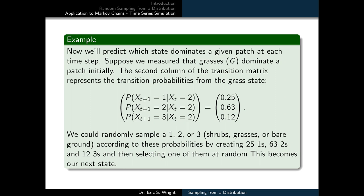Well that's all review, but now that we have the ability to sample from a probability distribution, and if we recognize that the three columns of the transition matrix just represent three different probability distributions, we're in a position where we can predict which state dominates a given patch in the landscape at each time step. So suppose we measured that grasses dominated a patch initially. The second column of the transition matrix represents the transition probabilities from the grass state to any of the other three states. And so these probabilities are 0.25 to transition to shrubs, 0.63 to stay at grasses, and 0.12 to transition to bare ground. We could then randomly sample a 1, 2, or 3 representing shrubs, grasses, or bare ground according to these probabilities by creating 25 ones, 63 twos, and 12 threes, and then selecting one of them at random. This would become our next state, at least in principle.